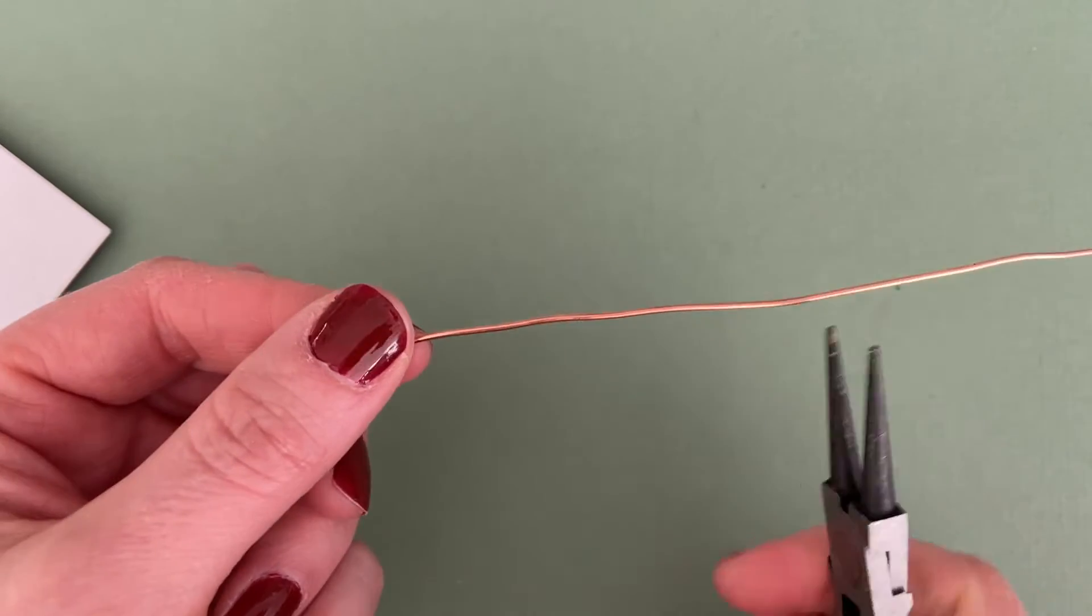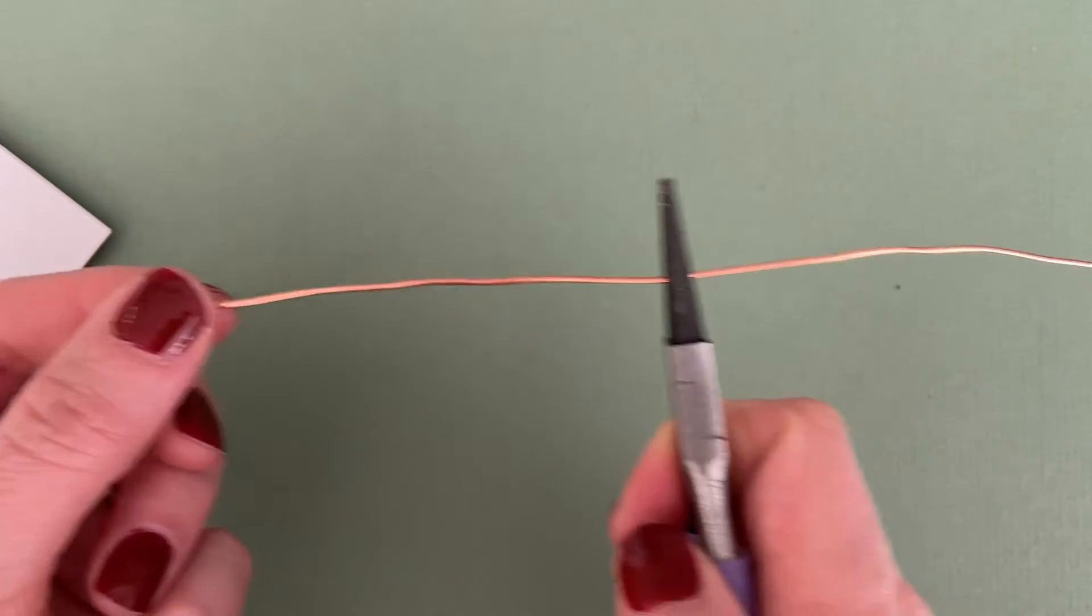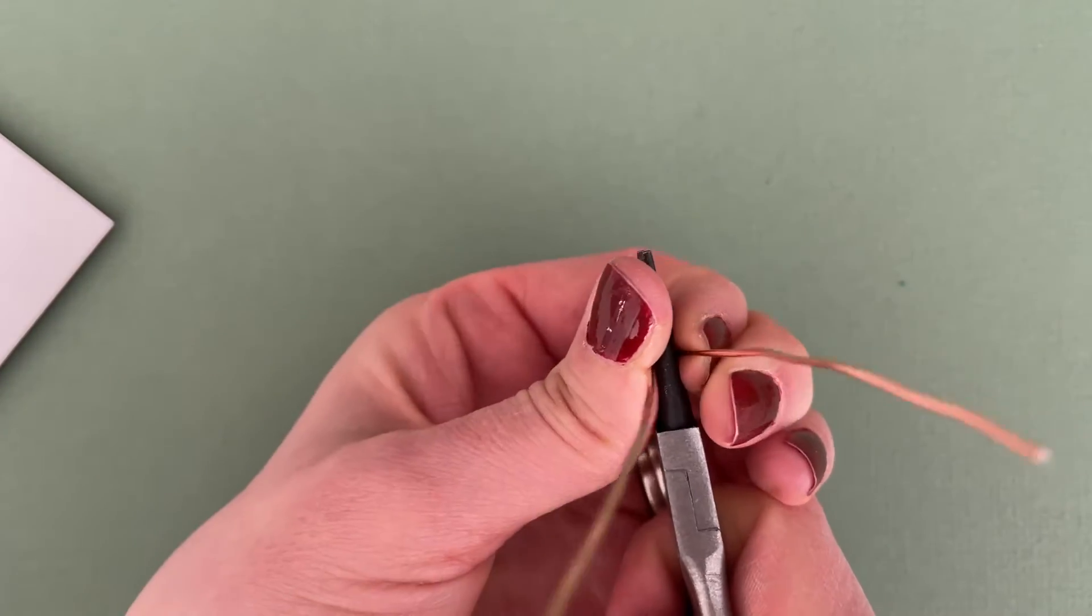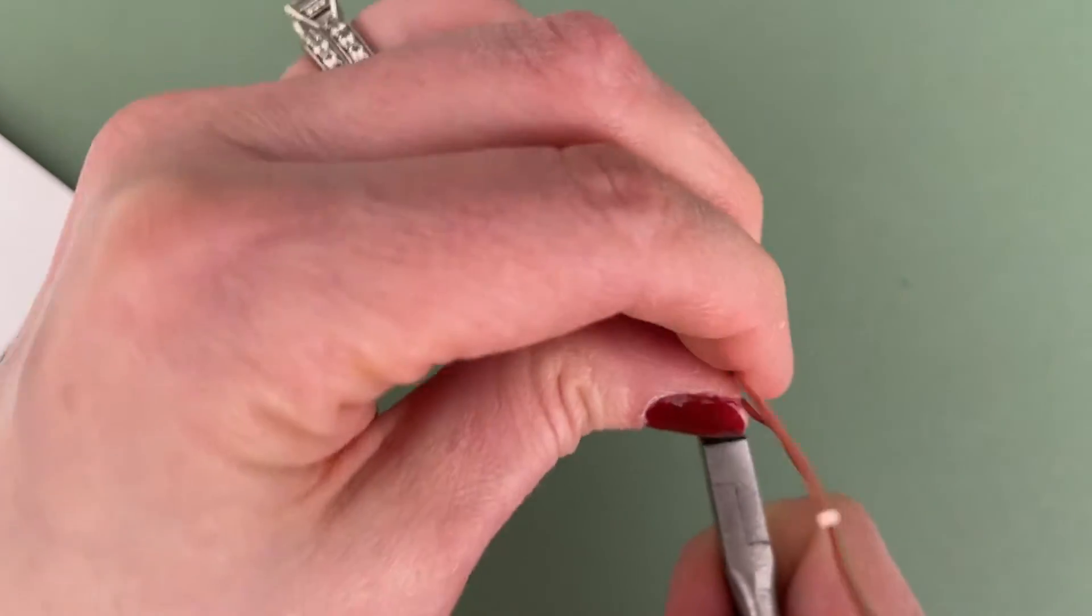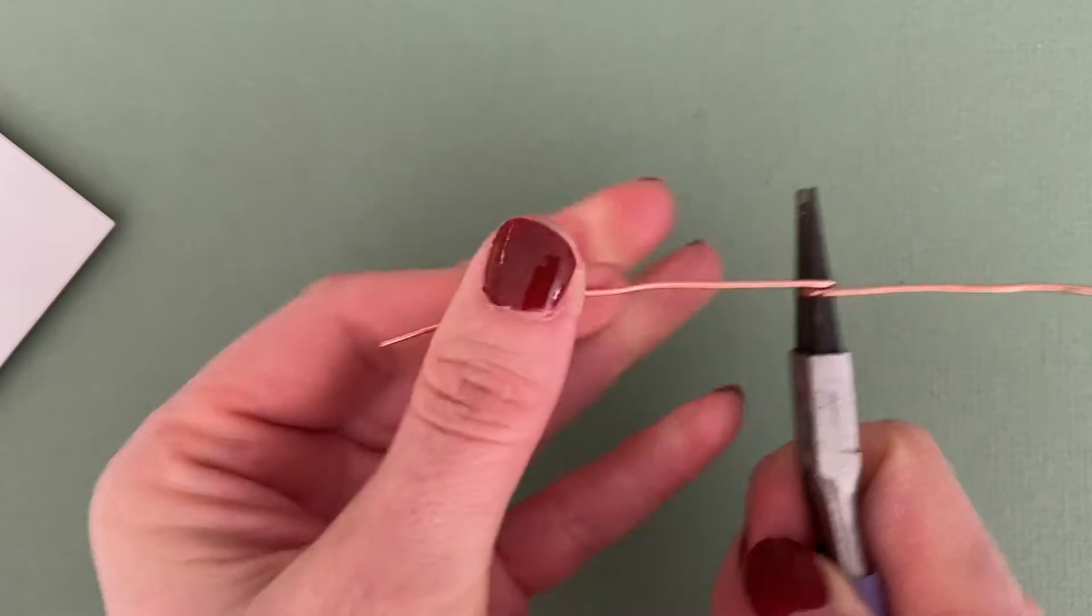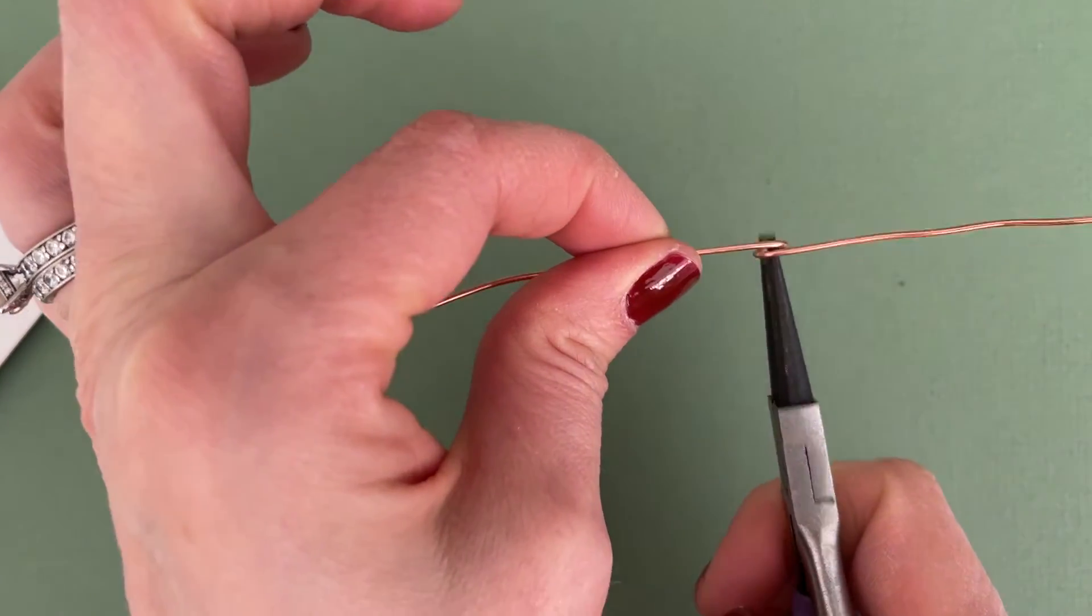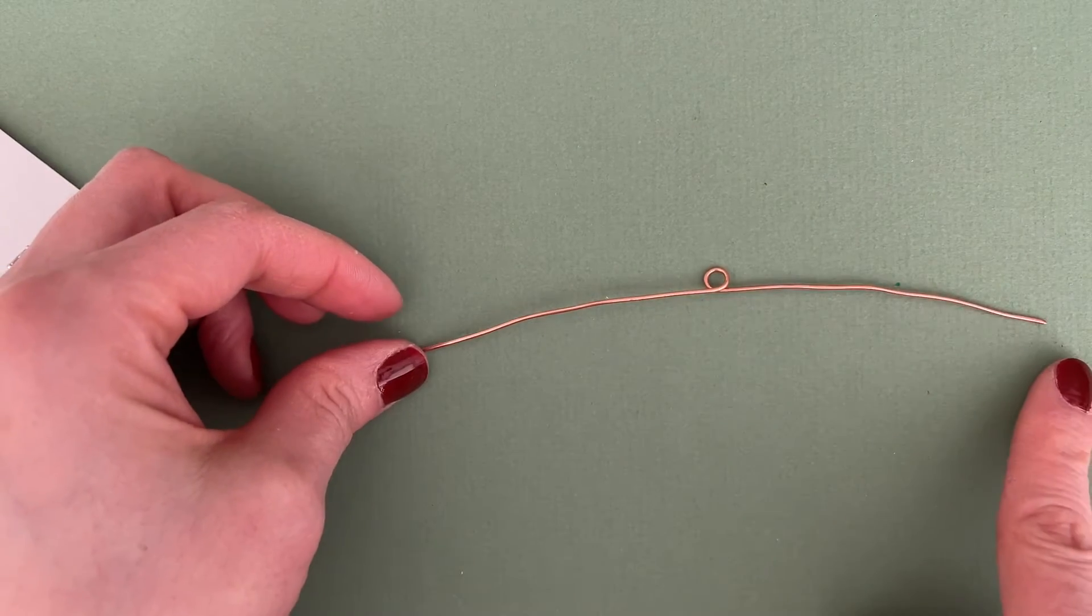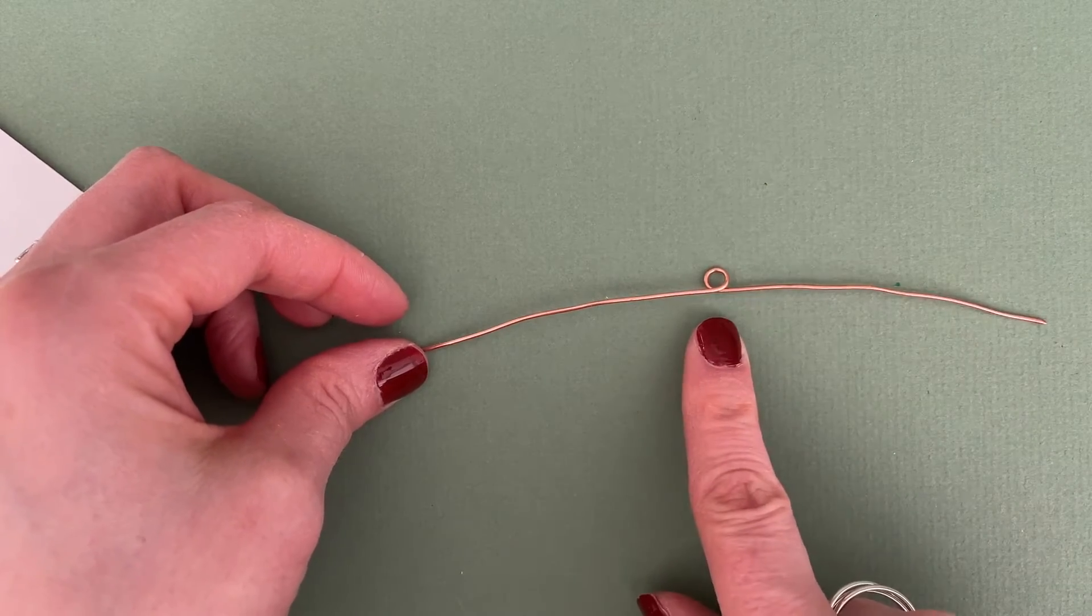We're going to start with our round nose pliers, gripping the wire towards the center. I'm just going to lift the two sides up and over so they crisscross. I'm going to pull each of these sides of the wire down and then wiggle my tool out. I am left with a piece of wire that's almost straight with a little loop in it.